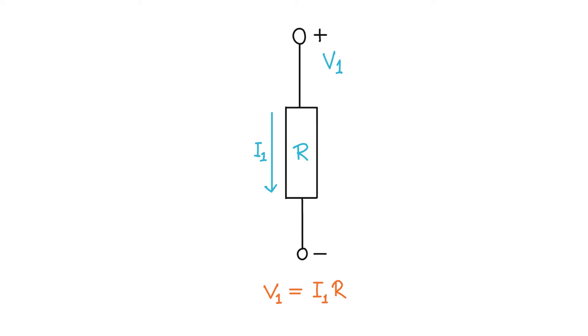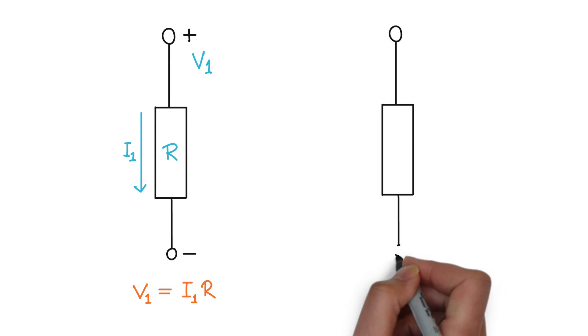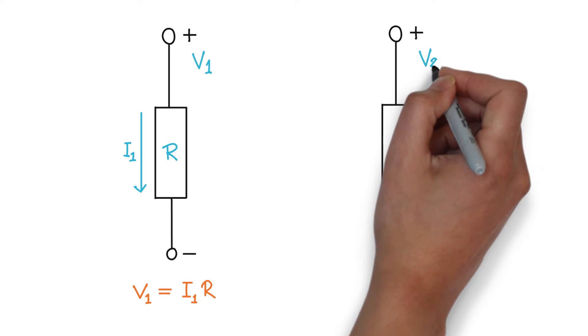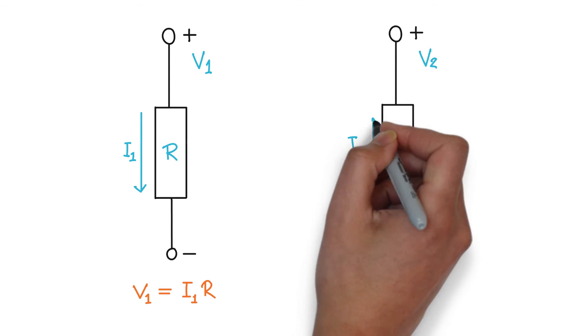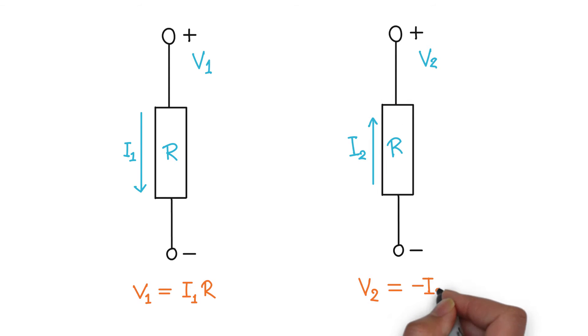However, if the arrow is pointing from the minus to the plus, we flip the respective reference directions. And so to keep our values consistent, we multiply by a negative one. So in this case, V is equal to negative I times R.